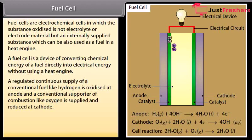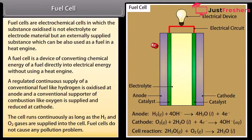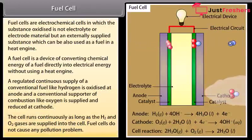A regulated continuous supply of a conventional fuel like hydrogen is oxidized at anode and a conventional supporter of combustion like oxygen is supplied and reduced at cathode. The cell runs continuously as long as the hydrogen and oxygen gases are supplied into the cell. Fuel cells do not cause any pollution problem.